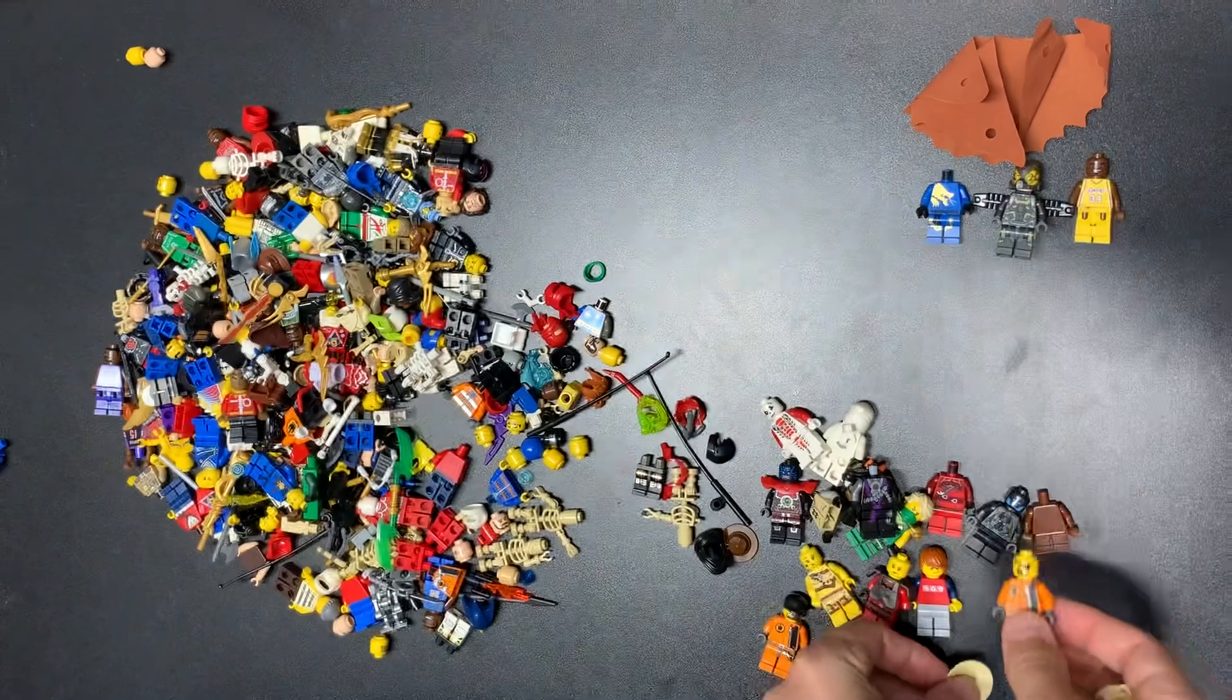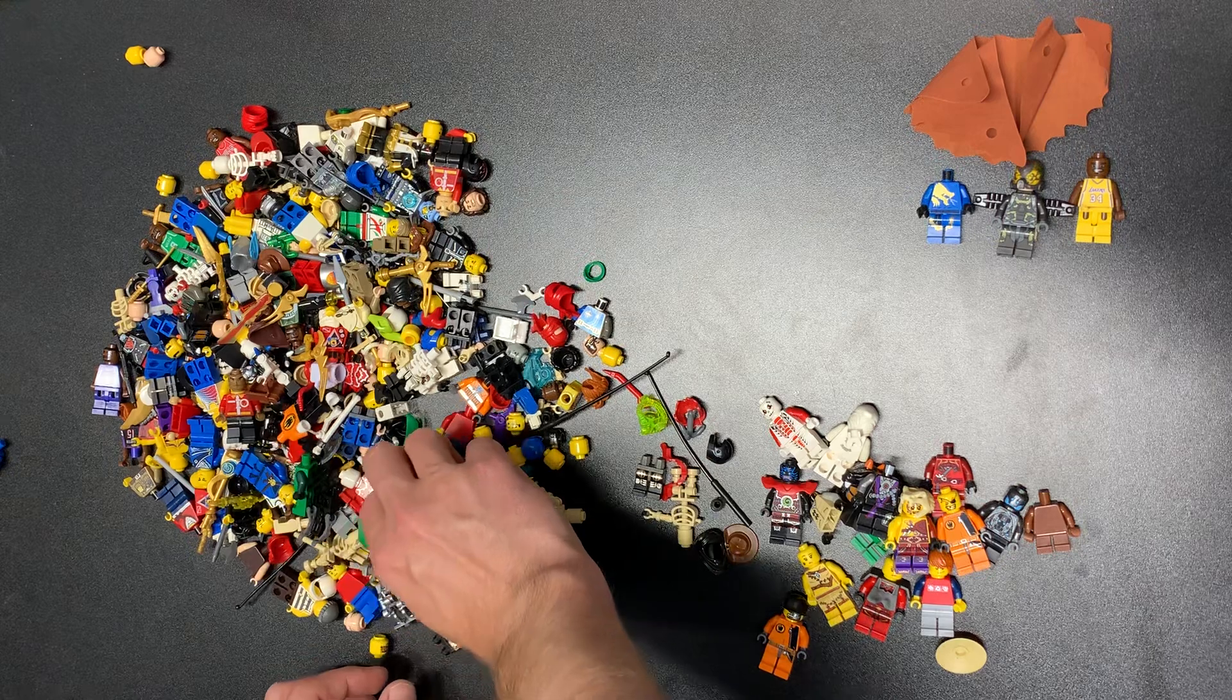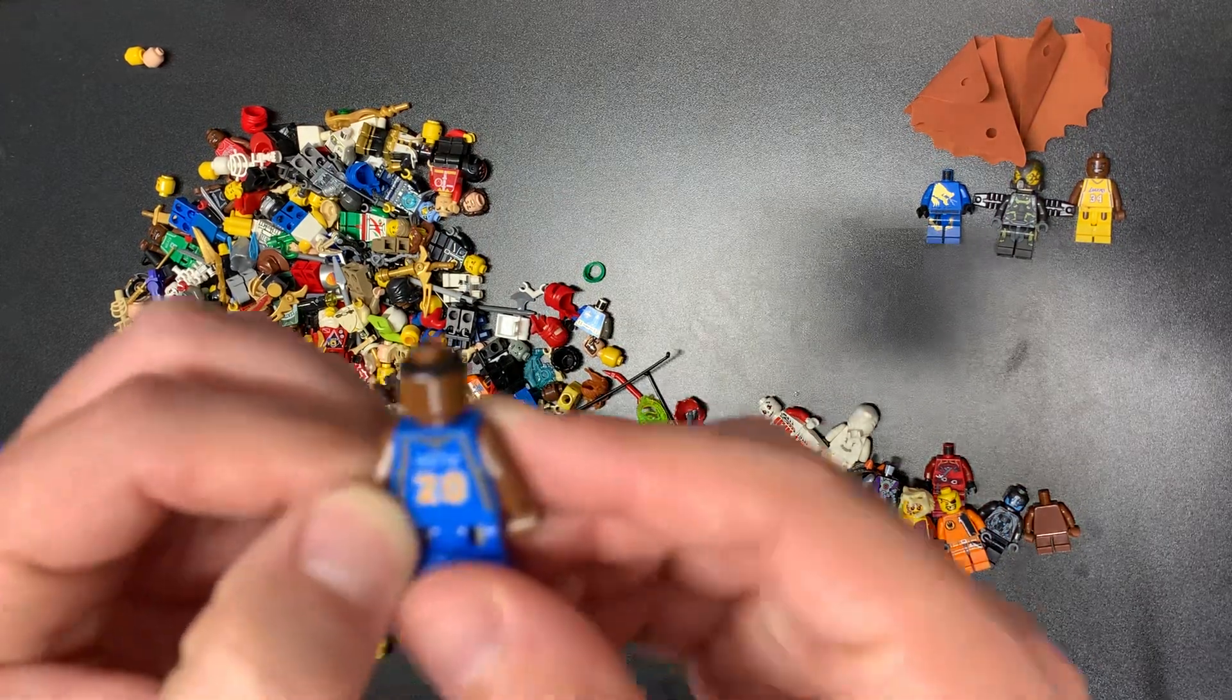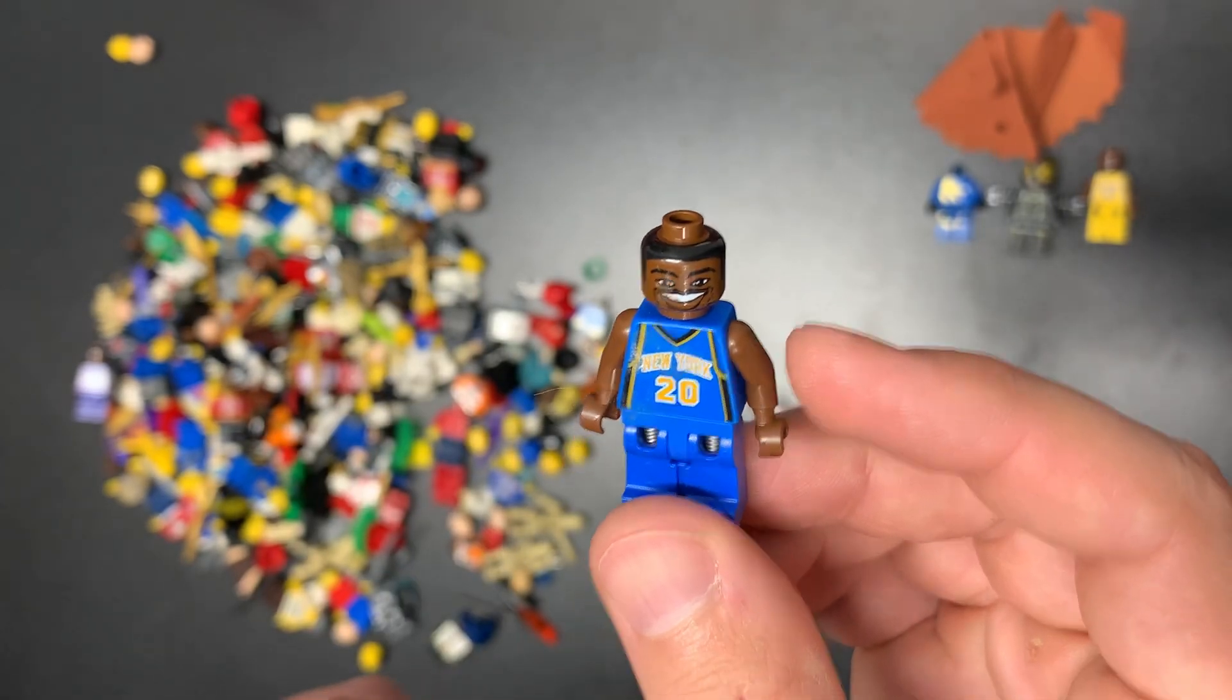I think I saw earlier this guy's headpiece, it's got like the gold mouth. Some of the Agents figs are classic, they're super cool. A lot of them are actually pretty valuable too to be honest, if you get some of the right ones. Don't know anything about basketball, so there's a guy from New York.